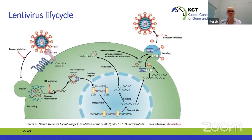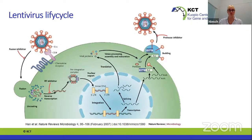Retroviruses differ in that they don't form a pre-integration complex and are not actively transported to the nucleus, which is why they can only infect dividing cells. From the genome, virus is transcribed, protein translation occurs, and the virus assembles with the genome and then buds. The budded virus undergoes final maturation after it releases from the cell. Importantly, lentiviral and retroviral vectors always take the envelope from the producer cell, so whatever is on the surface of the producer cell will be on the surface of the vector as well.